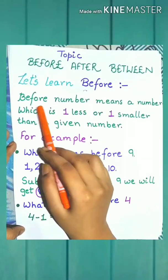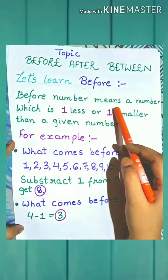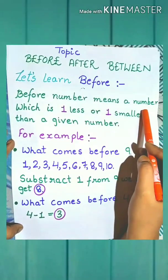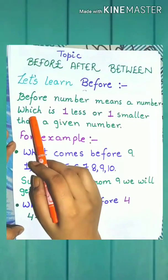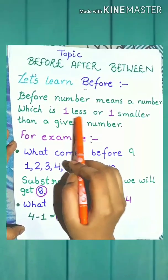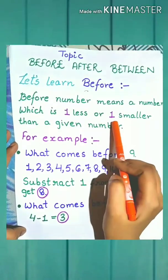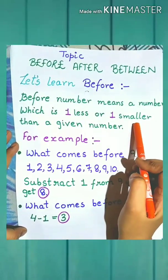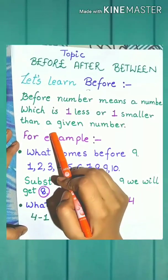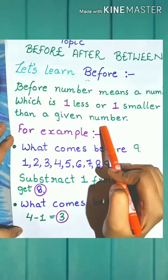Before number means a number which is one less or one smaller than a given number.